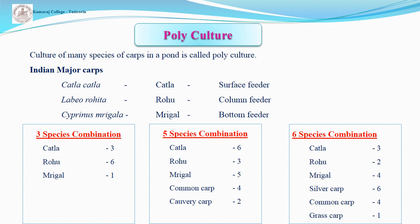The third culture type is polyculture. The culture of many species of carp in a pond is called polyculture. All three Indian major carps can be cultured in a single pond. Katla is a surface feeder and feeds on plankton, living mostly at the surface. Rohu is a column feeder that feeds on filamentous algae and lives in the middle zone. Mrigala is a bottom feeder that feeds on debris and worms and lives at the bottom of the pond.